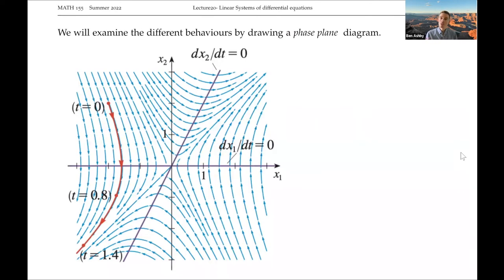Last time we met phase line diagrams in one dimension, and the two-dimensional analogue is a phase plane diagram. So we've gone from a line to a plane now.